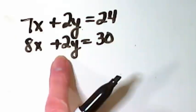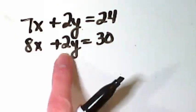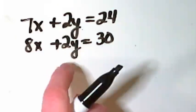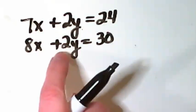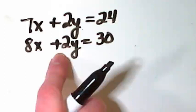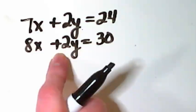But the y terms, with both being a positive 2y, I know I can just multiply one of these equations by negative 1, and it's going to turn one of those 2y's into a negative 2y, and then I can eliminate.